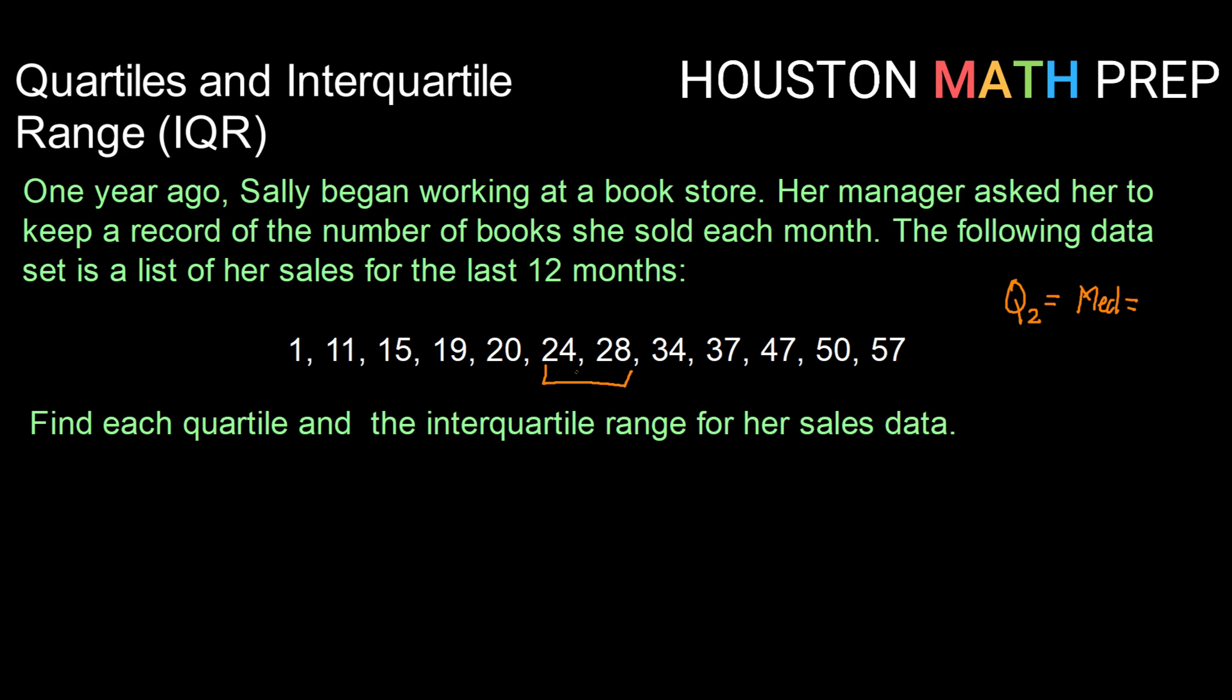These two values are my middle two numbers. So I need to take their average to find the median, q2. So the average of 24 and 28 will be 26. So my median, or q2, is 26.